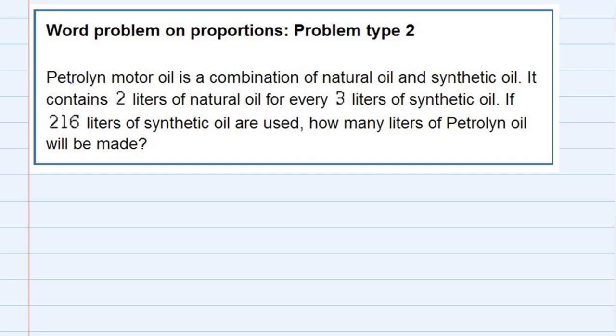So we've got something a little bit different than problem type 1. For starters, we're told that Petrolin, I'll call it P, is a combination of natural oil and synthetic oil. So to get Petrolin we have to take natural oil and add to it some synthetic oil.